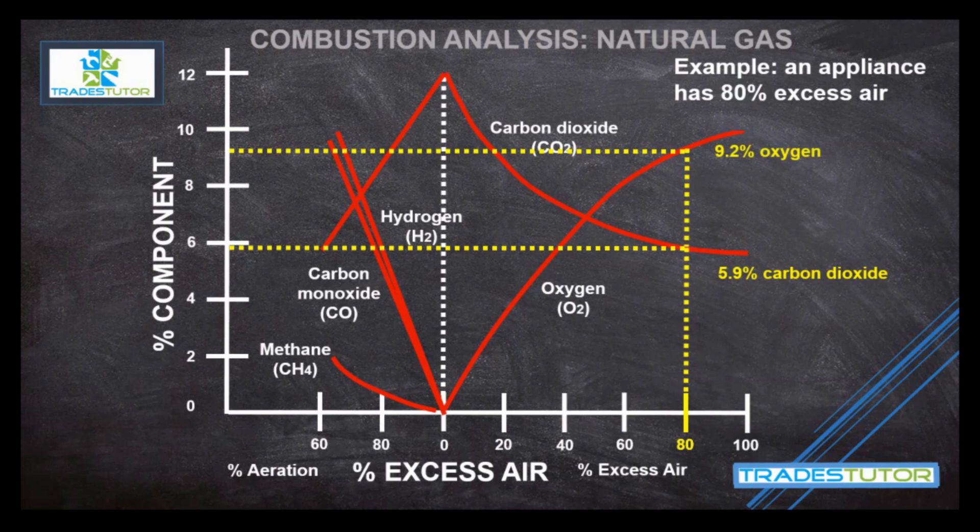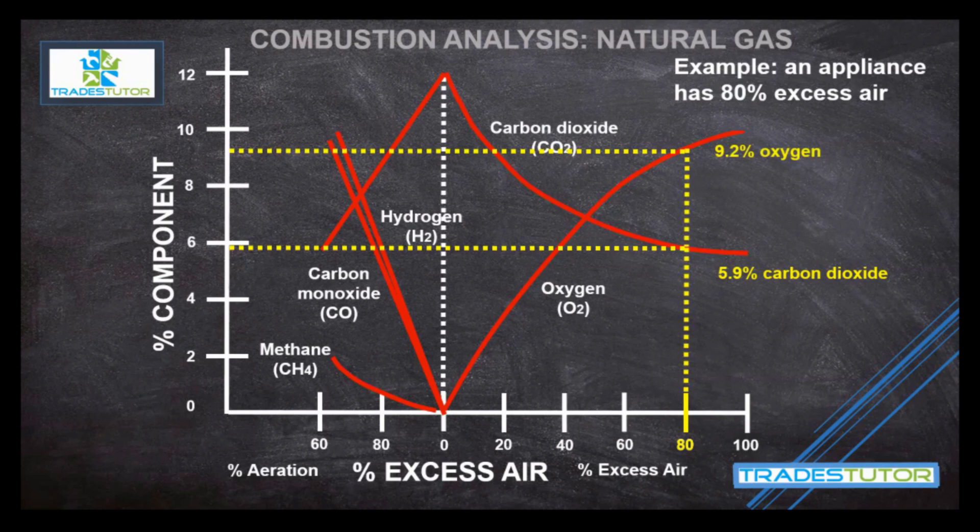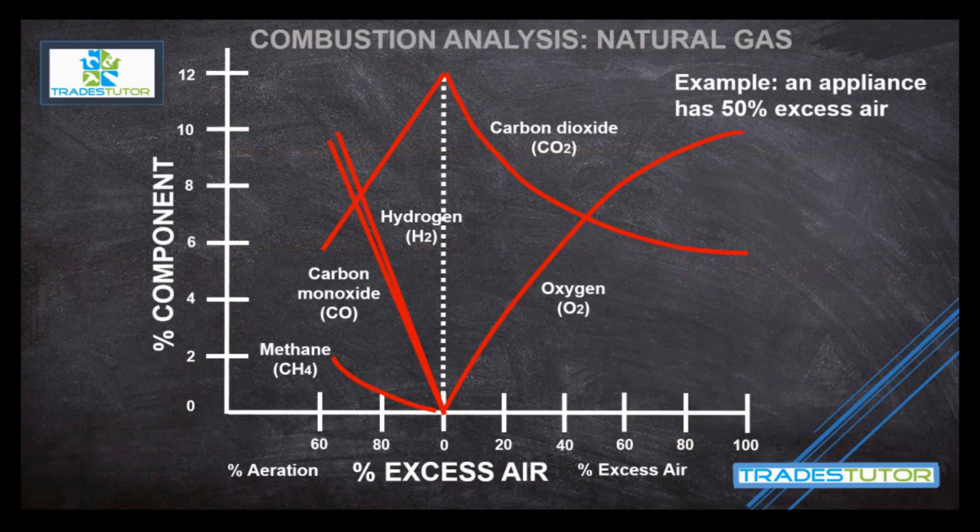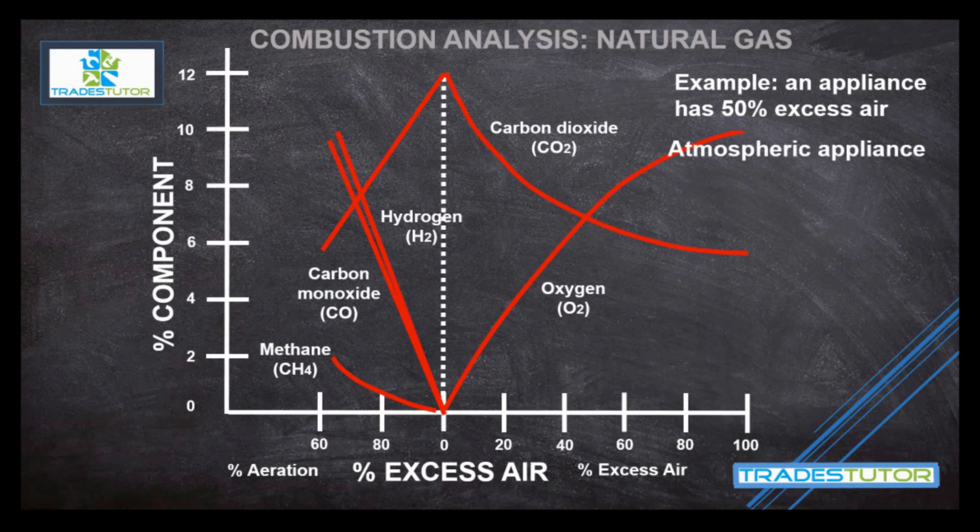All right. Should we try another one? All right, let's go. An appliance has 50% excess air. This is basically an atmospheric or natural draft appliance. The air going in, the air going through, the air going out of the appliance is all just natural. There's no fans or motors or anything like that pushing it around. So once again, go down to the excess air. We have to add the 50%. We can see it right there. And go straight up. And coincidentally, it lands almost where the oxygen and carbon dioxide cross.